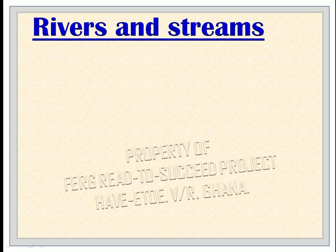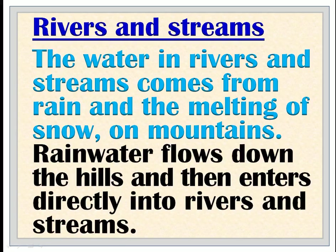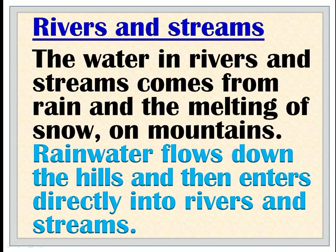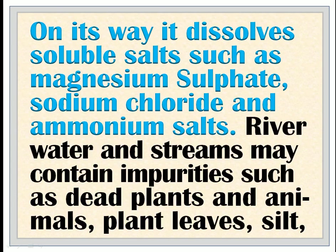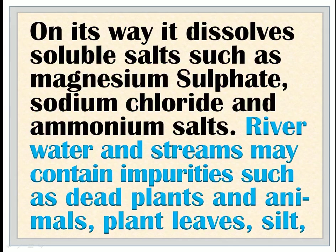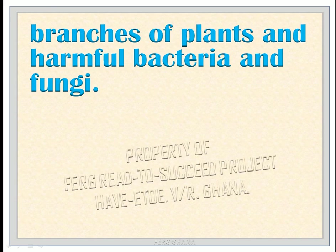Rivers and Streams: The water in rivers and streams comes from rain and the melting of snow on mountains. Rainwater flows down the hills and then enters directly into rivers and streams. On its way it dissolves soluble salts such as magnesium sulfate, sodium chloride, and ammonium salts. River water and streams may contain impurities such as dead plants and animals, plant leaves, silt, branches of plants, and harmful bacteria and fungi.